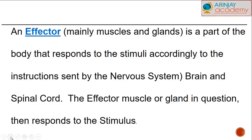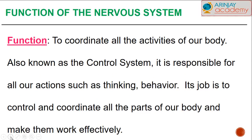The brain and the spinal cord are the two main categories responsible for the effector to function. The effector, or muscle or gland, responds to the stimulus. Any activity that has to be controlled and coordinated within our body is done by the nervous system, which is also known as the control system. Any activity such as thinking or how we behave and respond is all done by the control and coordination of the nervous system.